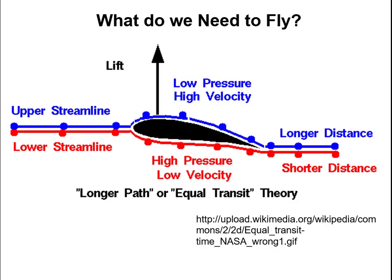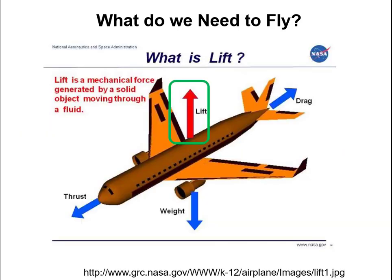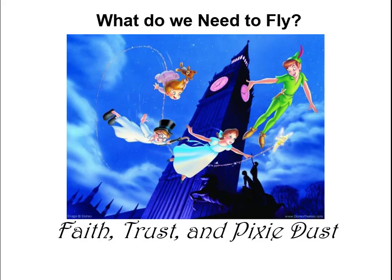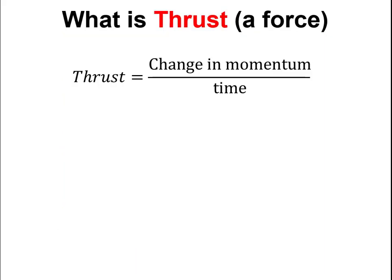We get lift when a wing moves through air by creating high pressure beneath the wing and low pressure above it, which pushes the plane up. But in order to get that lift the wing has to be moving through the air, so we need thrust. From a thermodynamic perspective we get that thrust from a jet engine — so it's more like we need faith, thrust, and pixie dust. Today we'll learn how to solve turbojet engine problems.